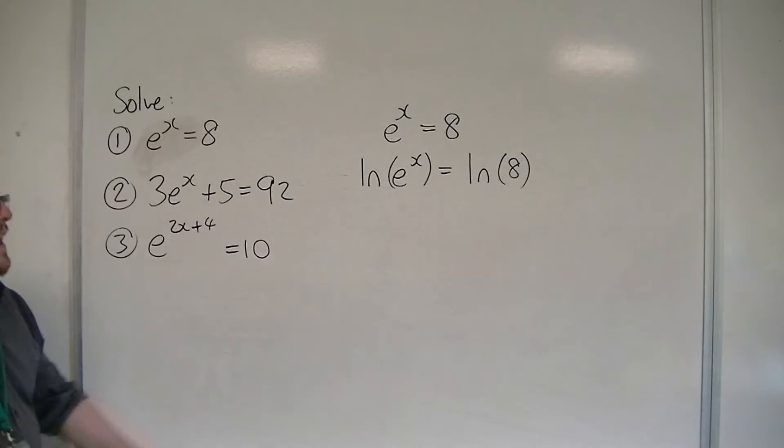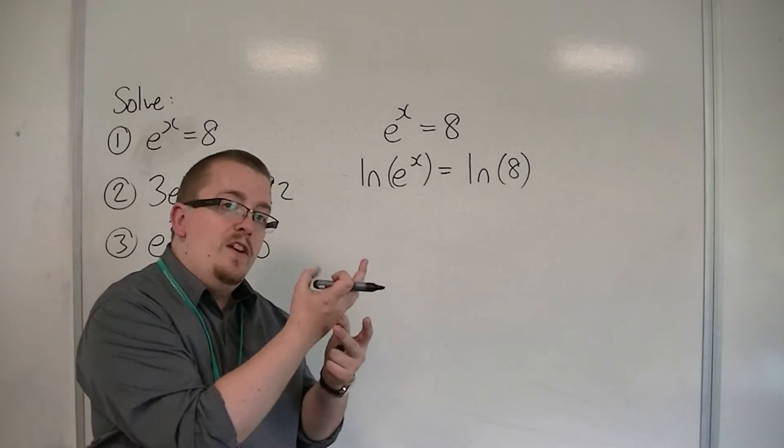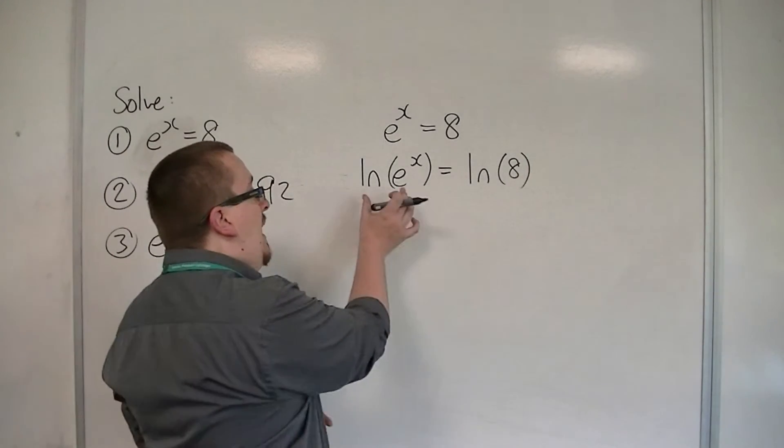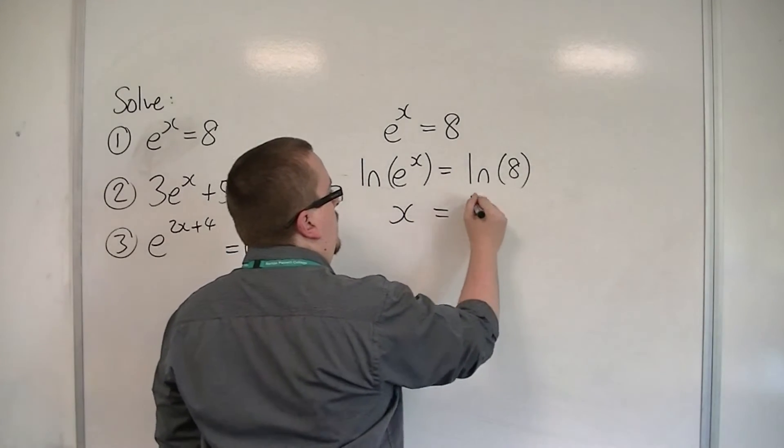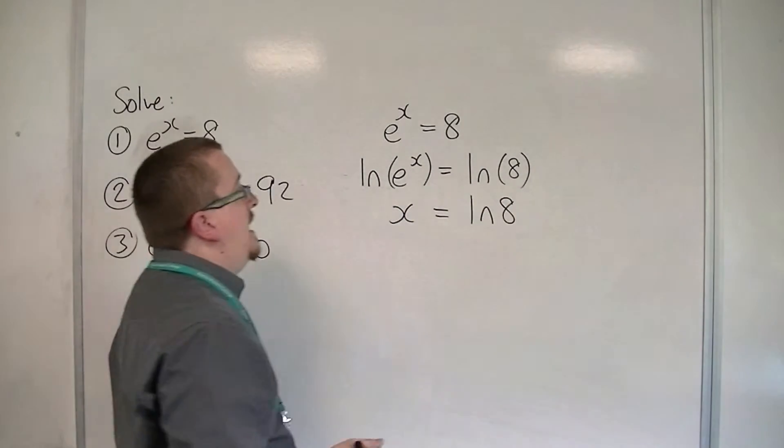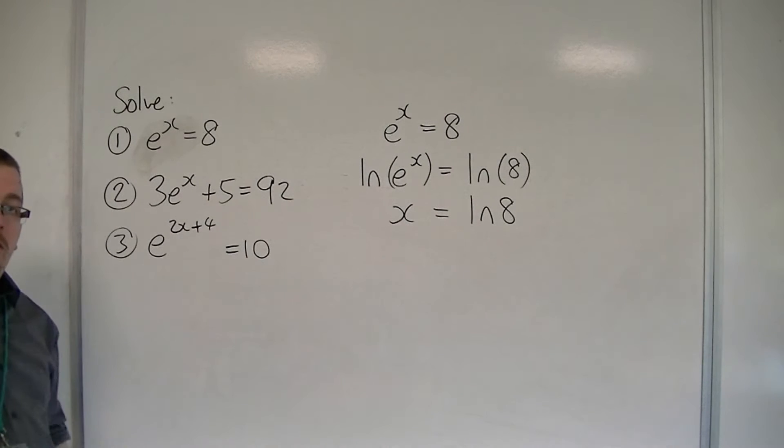Now, we know that when ln and e meet, they invert one another. And so ln of e to the x is just x. And so x is log 8, ln of 8.